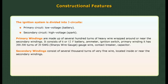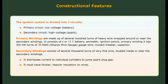Secondary windings consist of several thousand turns of very fine wire, located inside or near the primary windings. It distributes current to individual cylinders to jump the spark plug gap. The wires must have thicker, heavier insulation. Typical voltage required to jump the gap is 10,000 volts.